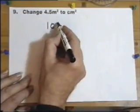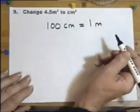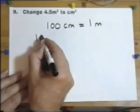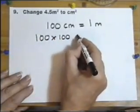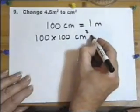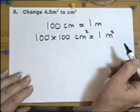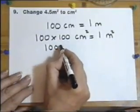There are a hundred centimeters in a meter, but in a square meter, that's how many square centimeters there are in a square meter: a hundred times a hundred, in other words a one with four noughts.